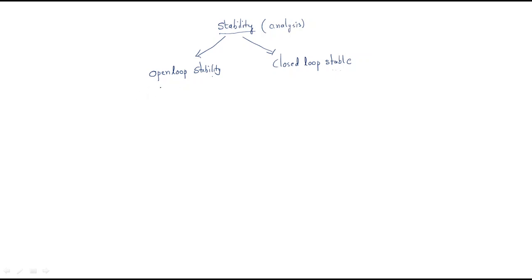Open loop stability means, as the name suggests, we are testing G(S) and G(S)·H(S). We take the open loop transfer function — sometimes H(S) equals 1. We perform the stability analysis on this open loop transfer function, that's why it is called open loop stability.